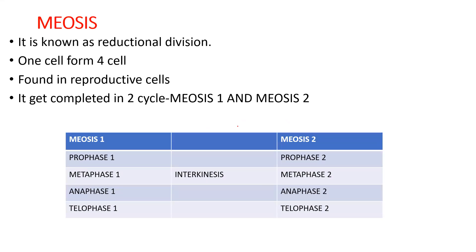Today's video topic is meiosis. Meiosis is a process of cell division, known as reductional division because the daughter cells produced have half the number of chromosomes than the parent cell. The chromosome number is reduced, that's why it is called reductional division.